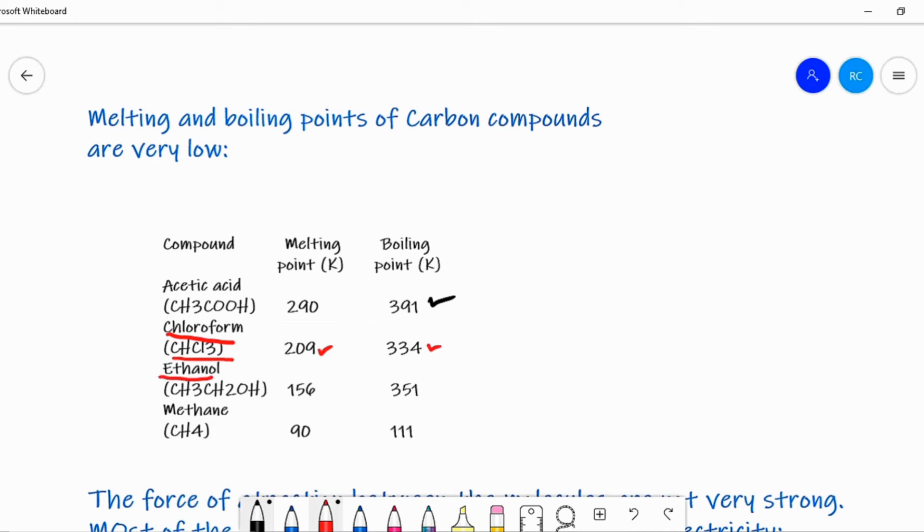And for ethanol, it means ethyl alcohol (C2H5OH), the melting point is 156 and the boiling point is 351. So overall, we can say the melting and boiling points of carbon compounds are very, very low.